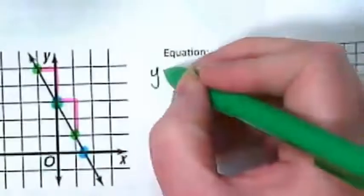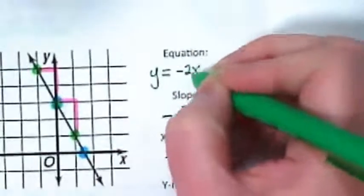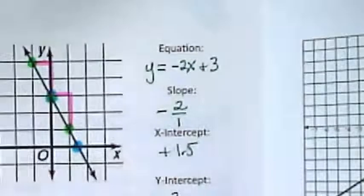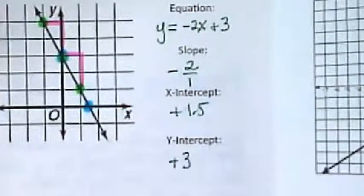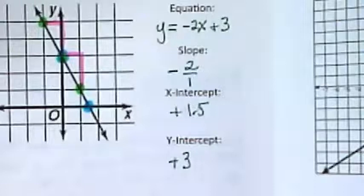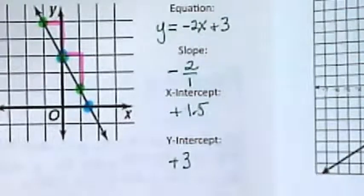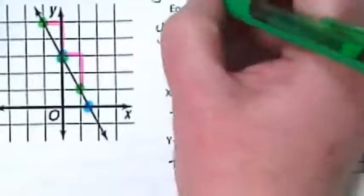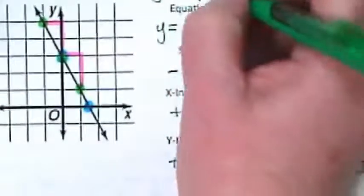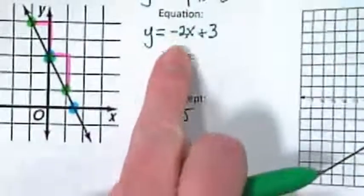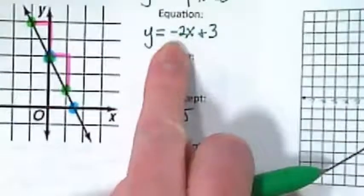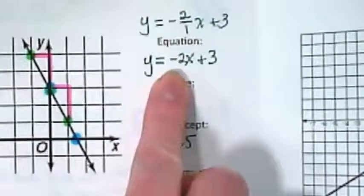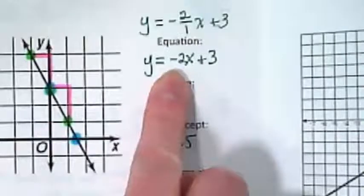We would write the equation as y is equal to negative two x plus three. What did I leave invisible here? The one. Sometimes, but very rarely, you might see this written like this. More often you won't, and so when we see a whole number here without a number underneath it, we just know that our run is one.